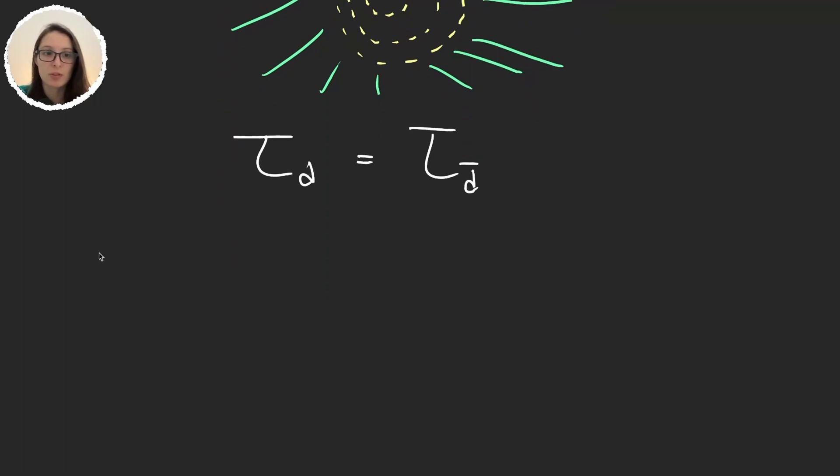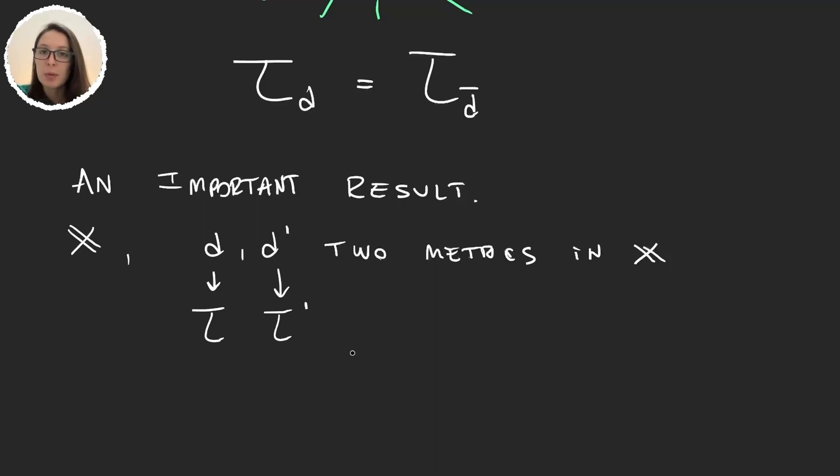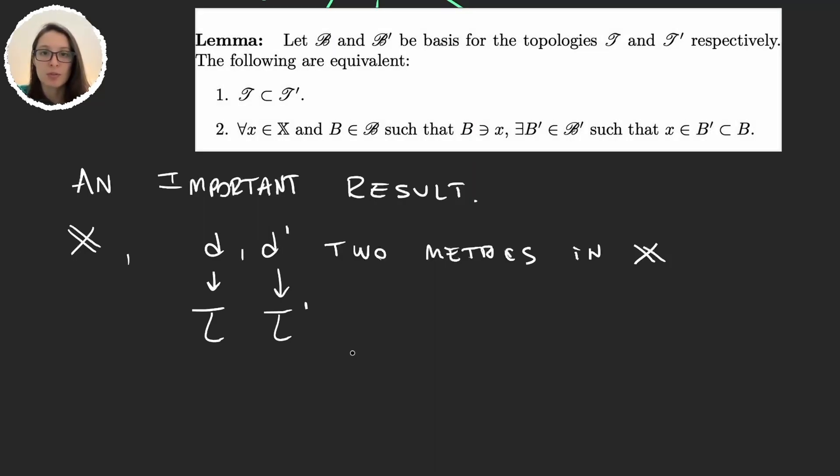Let's see an important result. So let's say we have a set X and two metrics, d and d', two metrics defined in our space X. So we have the two topologies, d induces a topology tau and d' induces a topology tau prime. So now if you remember the lemma that we saw in our basis video that is on the screen right now, it's very simple to realize that